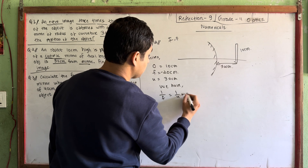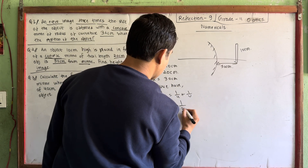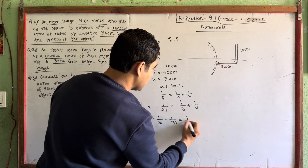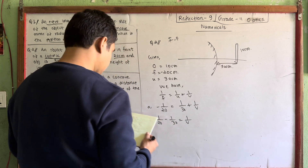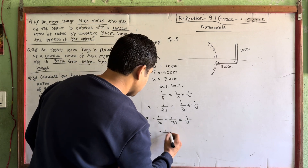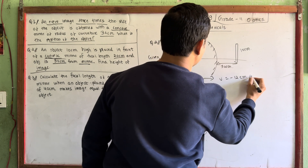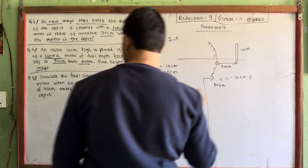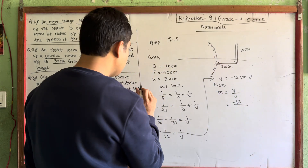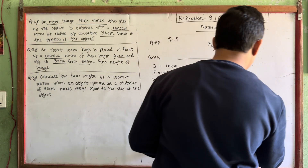Using the mirror formula: 1/f = 1/u + 1/v. So minus 1/20 = minus 1/30 + 1/v. Solving: 1/v = minus 1/20 + 1/30. The value of v comes out to minus 12. So the magnification m = v/u = minus 12 / 30 = minus 0.4.